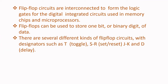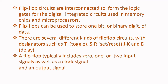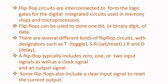There are several different kinds of flip-flop circuits with designators such as T (Toggle), SR (Set or Reset), JK, and D (Delay). A flip-flop typically includes 0, 1, or 2 input signals as well as a clock signal and an output signal. Some flip-flops also include a clear input signal to reset the current output.